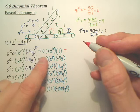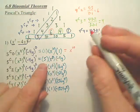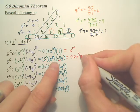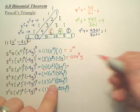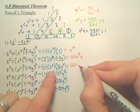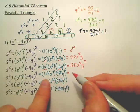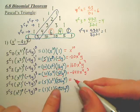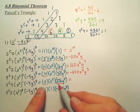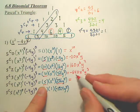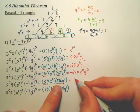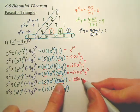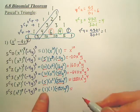Now multiply all across. The first term: just x to the tenth. Multiply the numbers: 5 times negative 4 gives negative 20, so negative 20 x to the eighth y. Next: 160 x to the sixth y squared. Then: negative 64 times 10 gives negative 640 x to the fourth y to the third. Then 1,280 x squared y to the fourth.